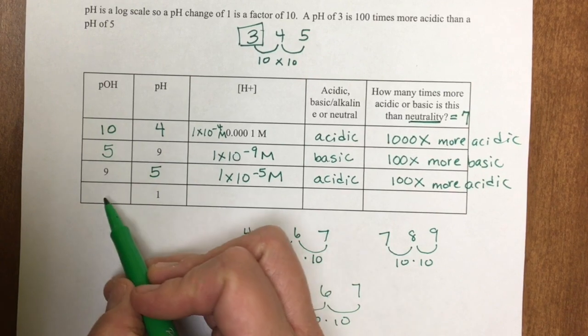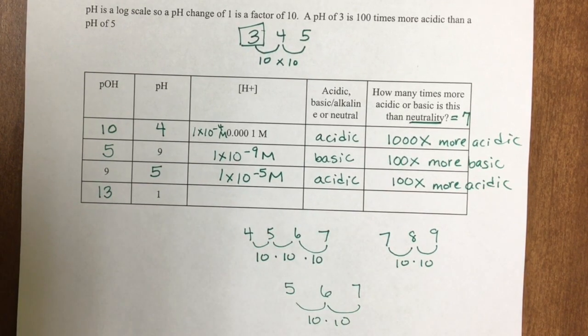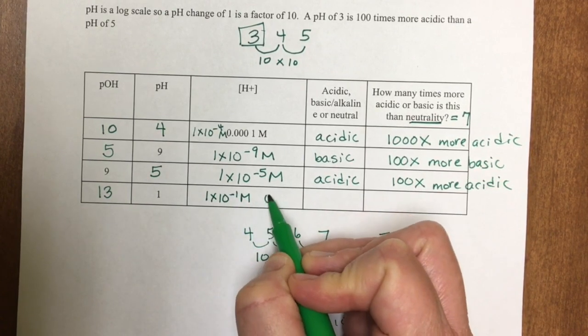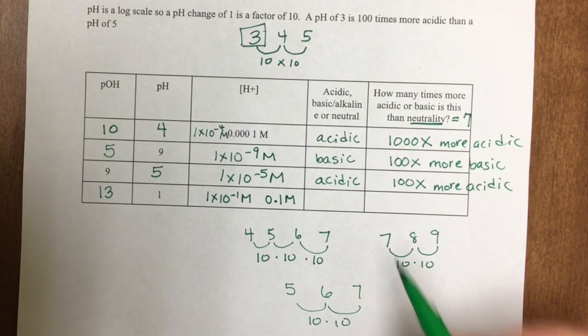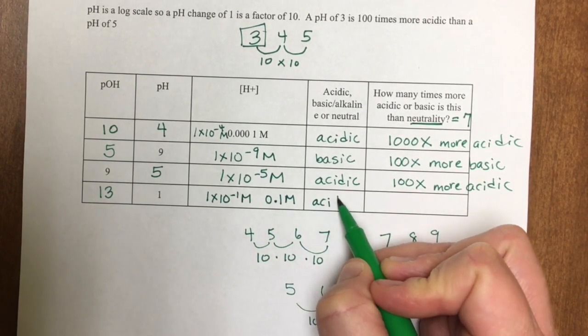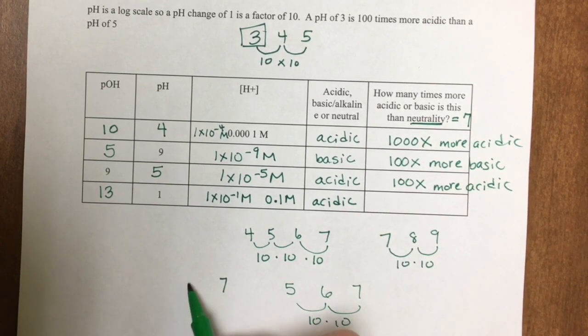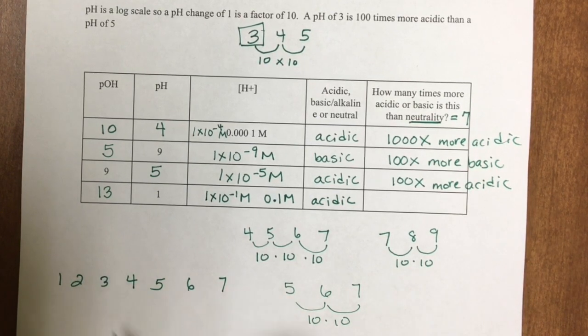The pH is 1, so pOH is 13, because 1 plus 13 is 14. Hydrogen ion concentration is 1 times 10 to the minus 1 molarity, or 0.1 molarity. This pH is less than 7, so it is acidic. Neutrality is 7, so I go 6, 5, 4, 3, 2, 1.